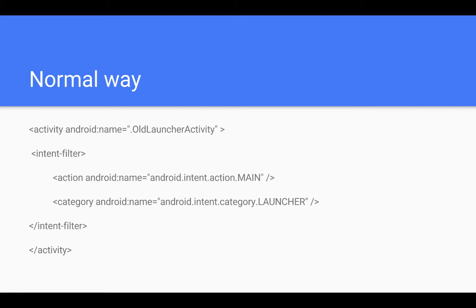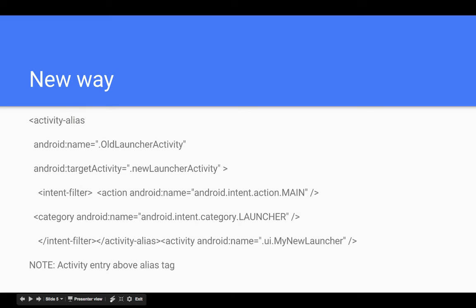So let's move on. This is the normal way we use in every app — an activity tag containing the name, intent filter with the action name and the category, and a closing tag. This is the standard approach we will now change using activity alias.